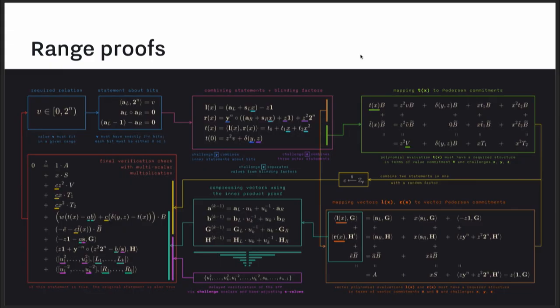One example — the simplest case for how you can do an interesting proof using Bulletproofs — is with a range proof. In a range proof, you want to prove that a certain value V is in a certain range between 0 and 2 to the n. The general intuition is that you want to break this one statement — V is in the range 0 to 2^n — into several different statements, then expand that into multiple polynomials and add blinding factors.